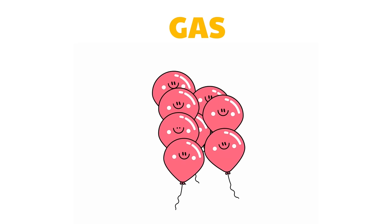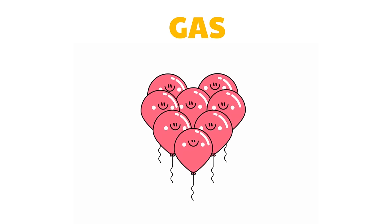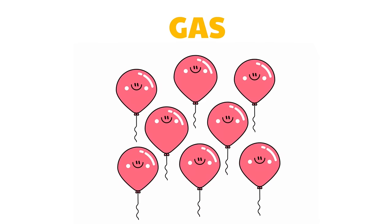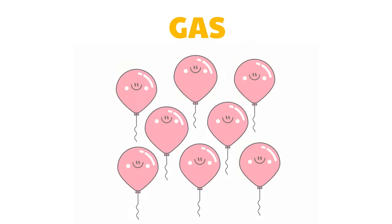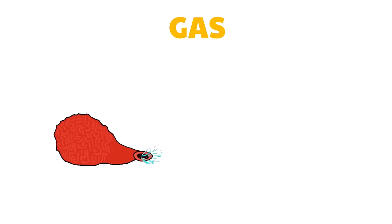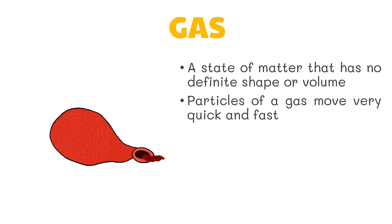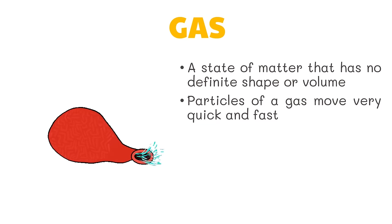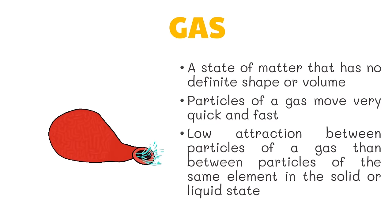Let's take the example of air inside a balloon. The particles of air inside a balloon are in constant motion and are far apart from each other. They are considered a gas since their particles can move to any space available. When you inflate or deflate a balloon, its shape changes because air is a gas. Gas is a state of matter that has no definite shape or volume. The particles of a gas move very quickly, so they can break away completely from one another. There is low attraction between particles of a gas compared to particles of the same element in the solid or liquid state.